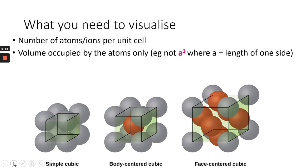So we need to visualize the number of atoms or ions per unit cell. And it requires a bit of thinking, because like we said, not every single atom fully occupies the space within the cube.